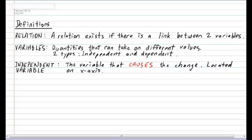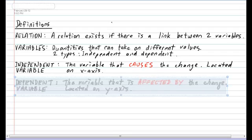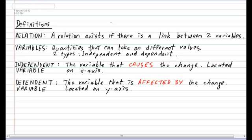And finally let us define what is meant by the dependent variable. The dependent variable is the variable that is being affected by a certain change and is always located on the Y axis of the Cartesian plane. So that's basically all the vocabulary that you really need to know for now.